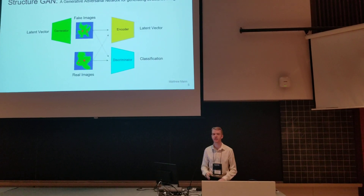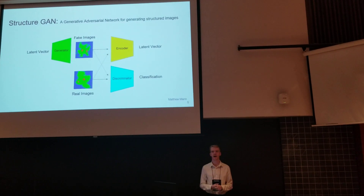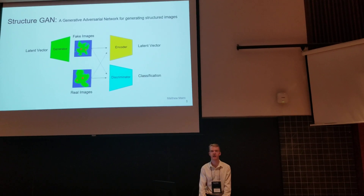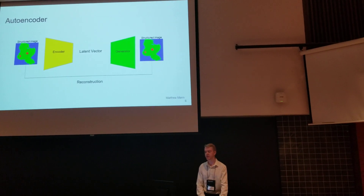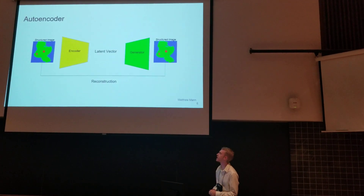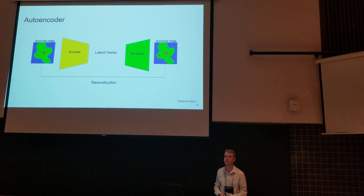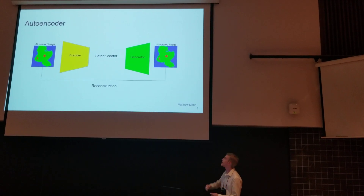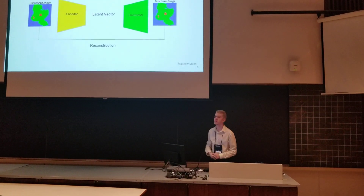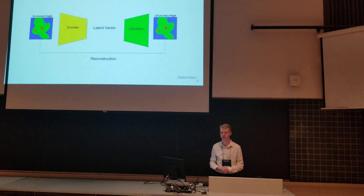We also add an encoder network which takes a structured image and maps it back to a latent vector. This allows two new training configurations. The first is an auto-encoder: a structured image is encoded into a latent vector, then the generator maps it back to the original structured image, and a reconstruction loss ensures these images are the same.